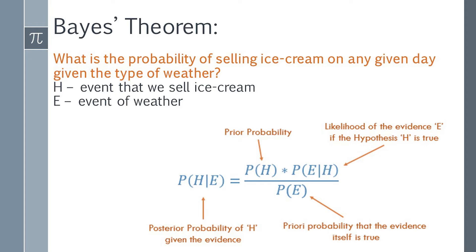Which is, for example, rainy or windy, snowy, etc. Let H represent the event that we sell ice cream and E be the event of the weather. Then, we might ask, what is the probability of selling ice cream on any given day, given the type of weather?